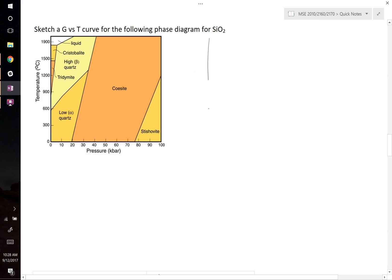Let's start by drawing our axes. We're going to have G and T. Now the temperatures range from 0 up to about 1900. There's six tick marks, so we'll mark those out accordingly.